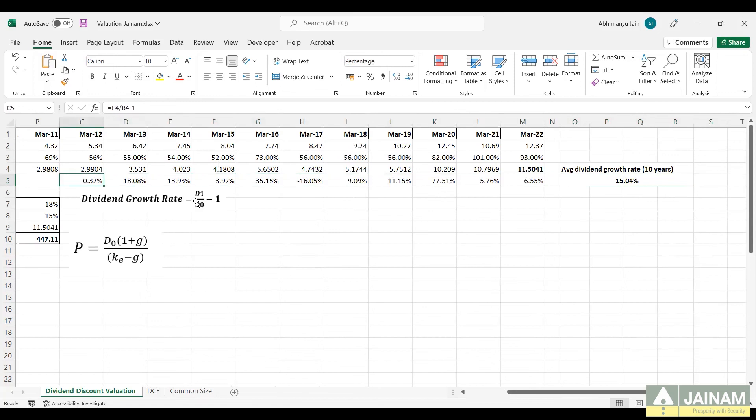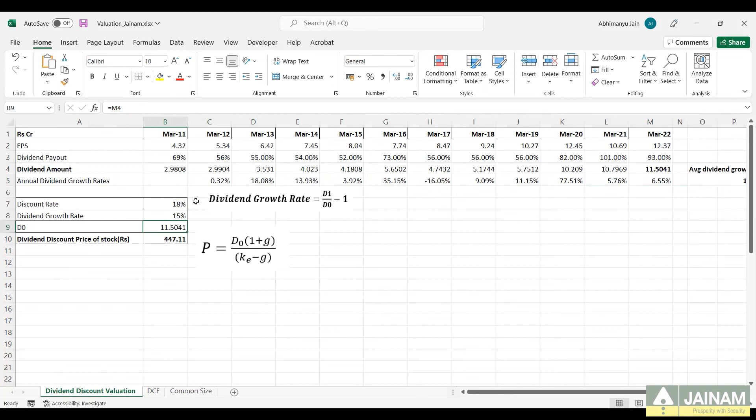We take D0 as the present year's dividend, which is the dividend of the year 2022 in our case. KE is the cost of equity or the required rate of return. Now plugging in the values of D0, G and KE in our formula, we get the fair price of the stock using the DDM model.